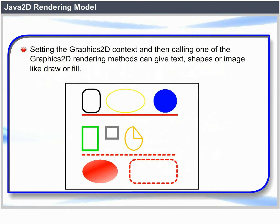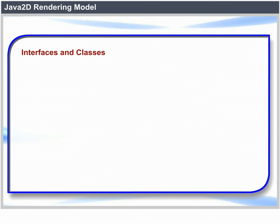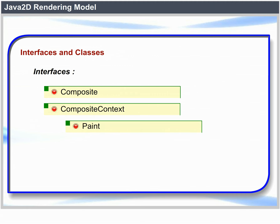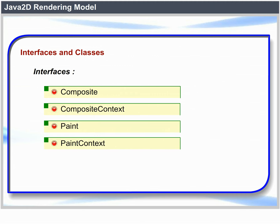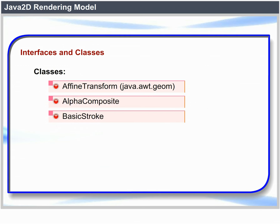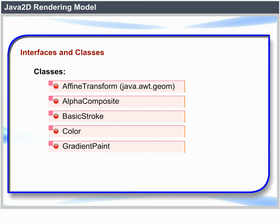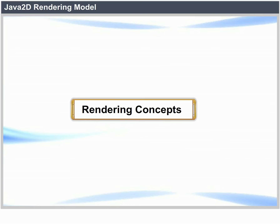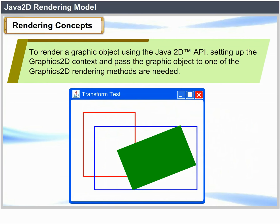shapes or images like draw or fill. Interfaces and classes: Interfaces include Composite, CompositeContext, Paint, PaintContext, and Stroke. Classes include AffineTransform, AlphaComposite, BasicStroke, Color, GradientPaint, Graphics2D, and TexturePaint.